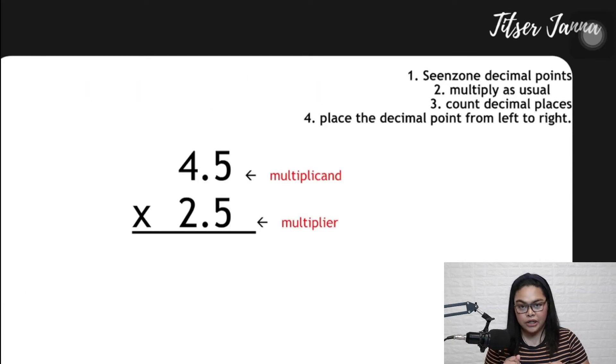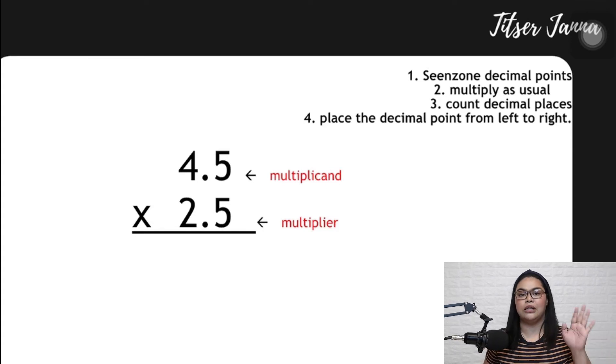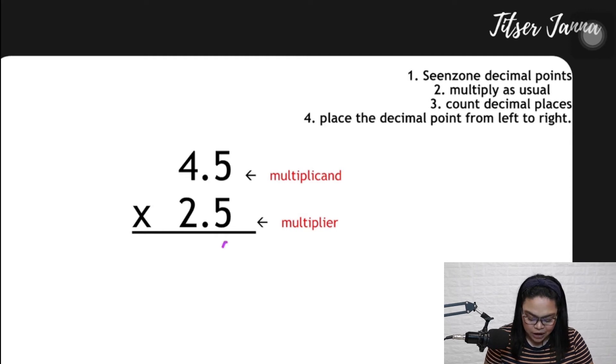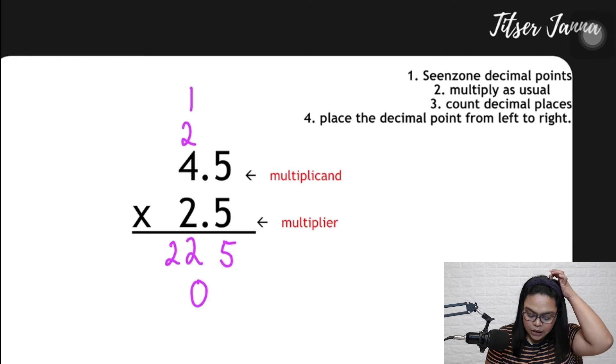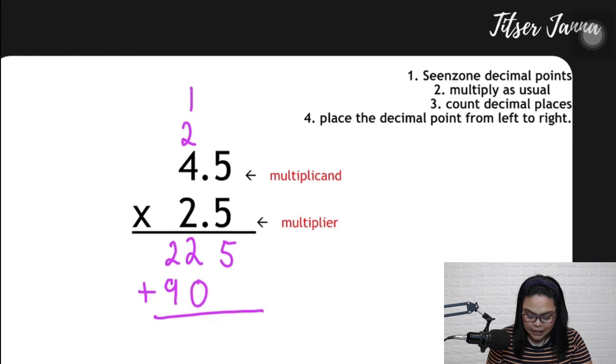Let's try this first example. We ignore the decimal points first, so we'll consider it as 45 times 25, as if there are no decimal numbers yet. So we multiply them. 5 times 5, that's 25. 4 times 5 is 20 plus 2, that is 22. 2 times 5 is 10. 2 times 4 is 8 plus 1 is 9. Of course, we add them. 5, 2, and then 11.